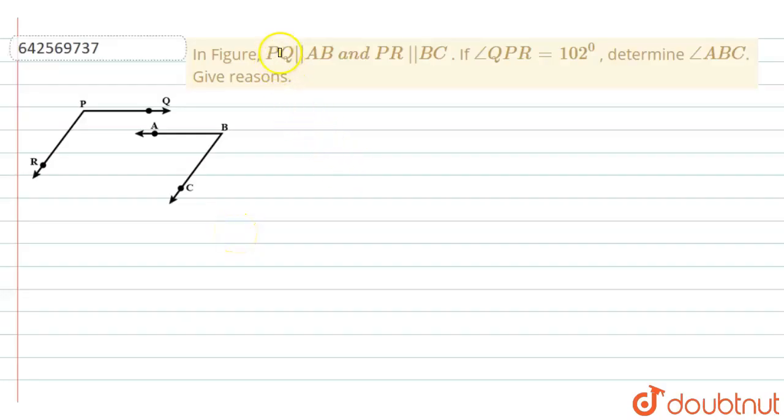The question says that in figure PQ is parallel to AB and PR is parallel to BC. If angle QPR is equal to 102 degrees, determine angle ABC and give reasons.